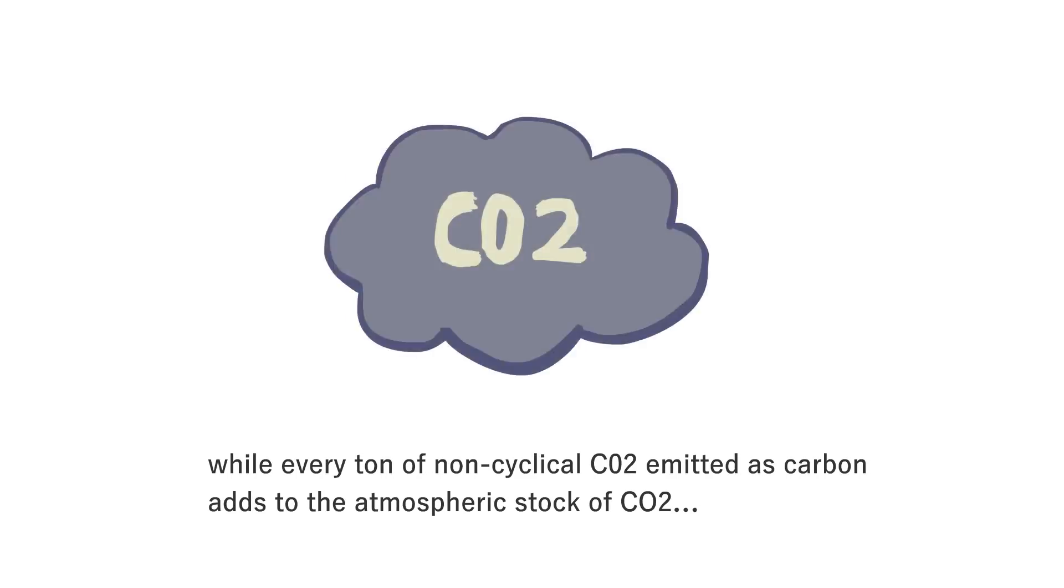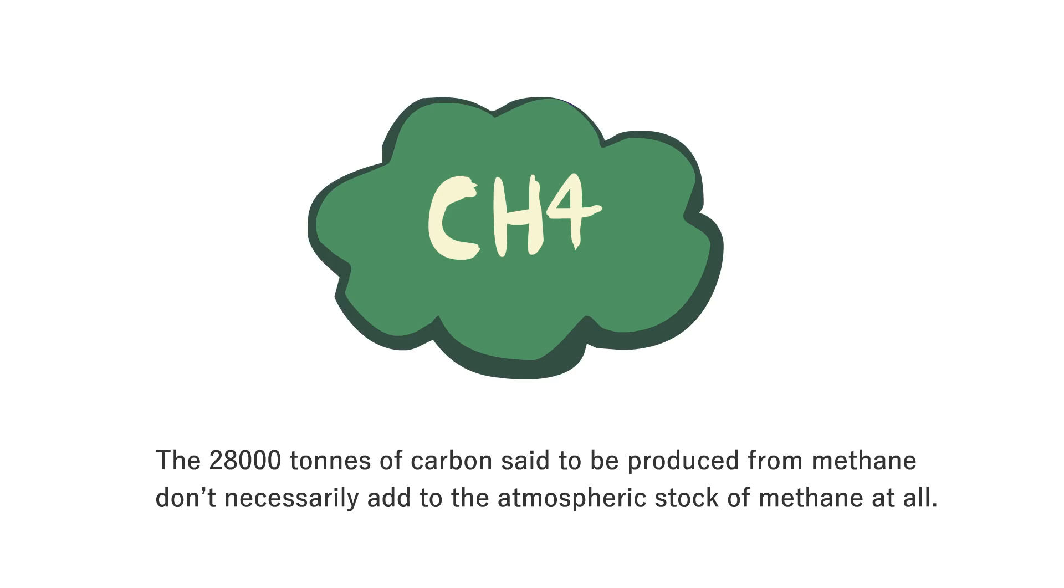However, while every ton of non-cyclical CO2 emitted as carbon adds to the atmospheric stock of CO2, the 28,000 tons of carbon said to be produced from methane don't necessarily add to the atmospheric stock of methane at all. This is where the carbon unit sort of falls to bits.